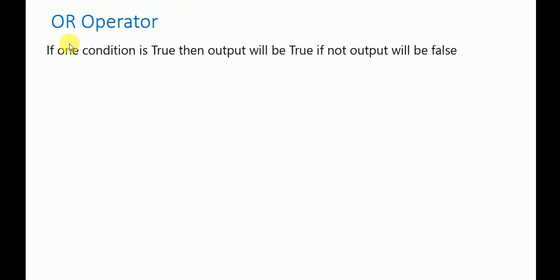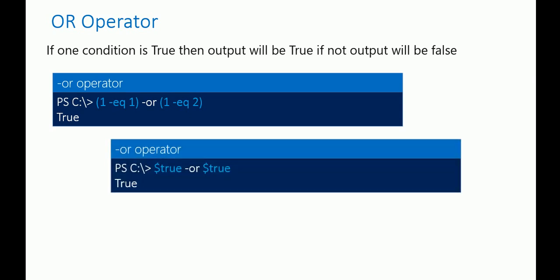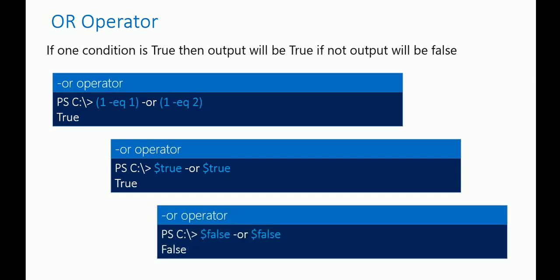Now let's understand the OR operator. If one condition is true then the output will be true; if not, the output will be false. In the entire statement, at least one condition should match a true value. For example: first statement true, second false — output is true. First statement true, all true — output is true.